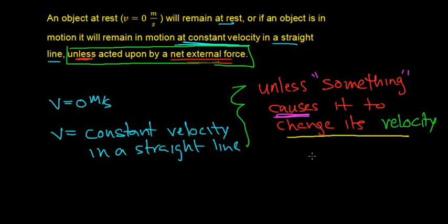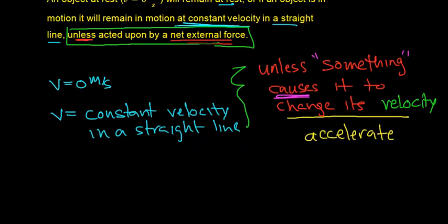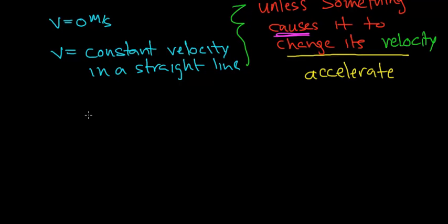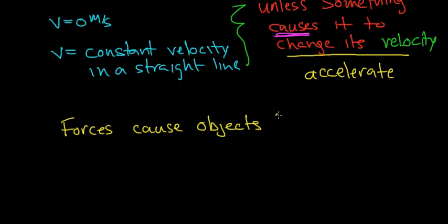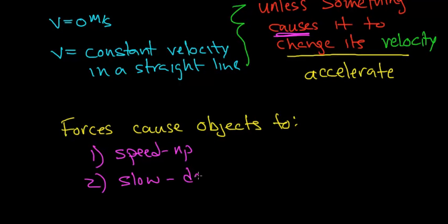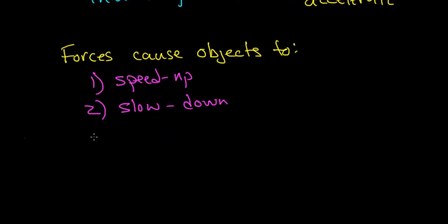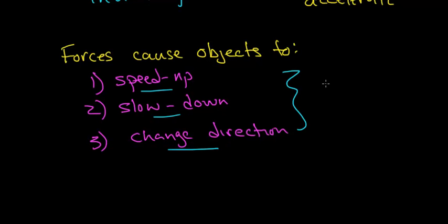Forces cause objects to change their velocity. Another way to say that is forces cause objects to accelerate. So let's summarize what Newton's first law of motion is actually saying: it's telling us what forces do. Forces cause objects to speed up, or to slow down, or — a final and very important thing — forces cause objects to change direction. And notice, when an object speeds up, slows down, or changes direction, these are three examples of acceleration.